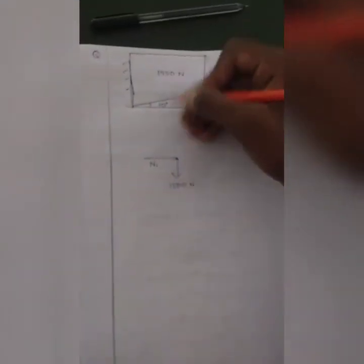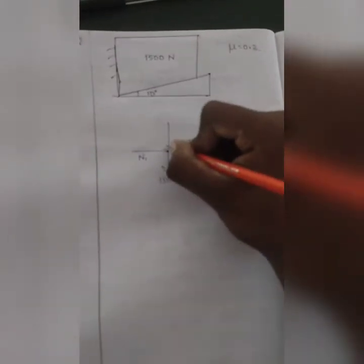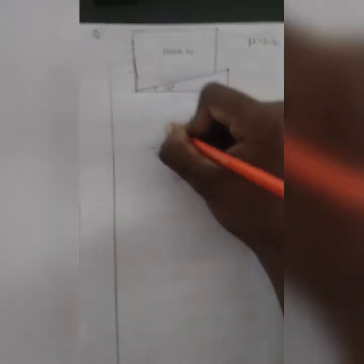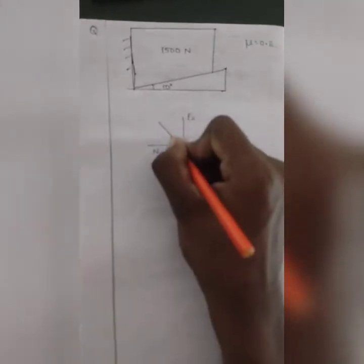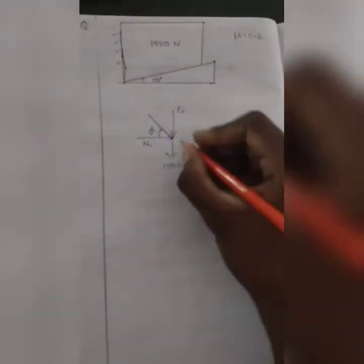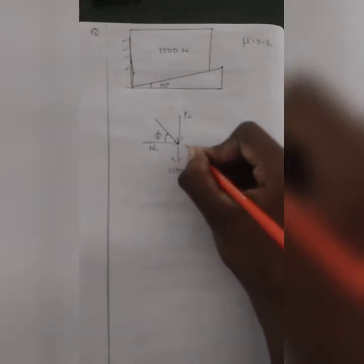The block is 1,500 N. The friction force is F2. The resultant is R2. The angle is φ. Next.